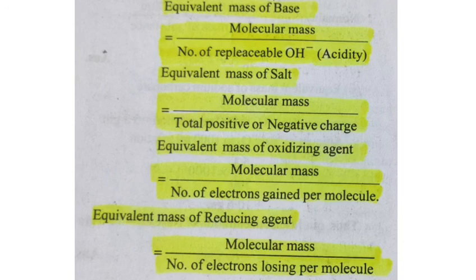And the last formula: the equivalent mass of a reducing agent is equal to molecular mass divided by the number of electrons lost per molecule. Each molecule losing electrons — that is the count. I hope students you now have the concept clear. This concept will actually be used in normality, so you need to be very clear.